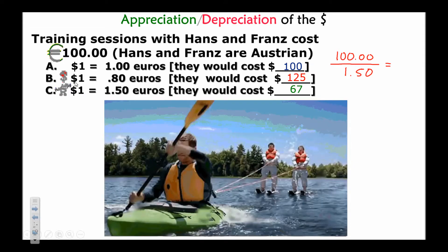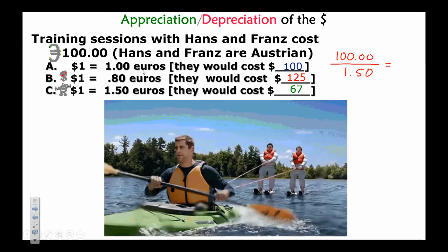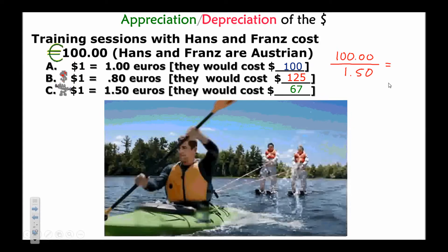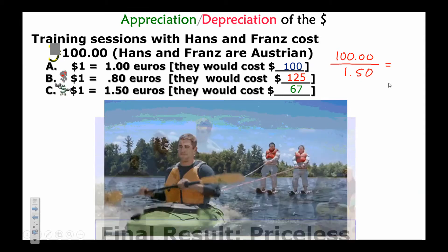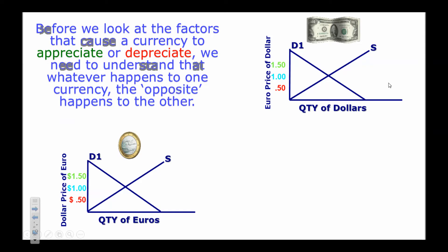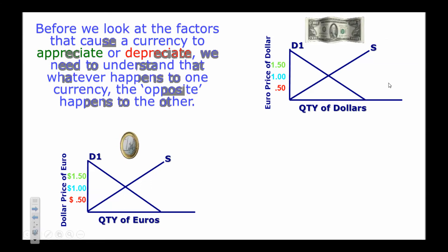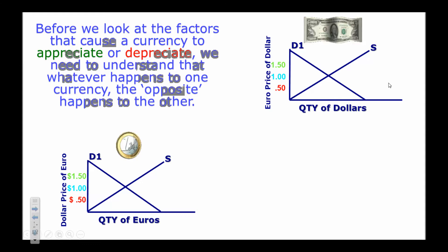Conversely, if a dollar now buys 1.5 euros, divide the 100 euros by 1.5 to get $67. Whenever currencies go up and down in value, the price of foreign goods, exports, and imports all change in terms of your own currency. That's why this is important to understand.